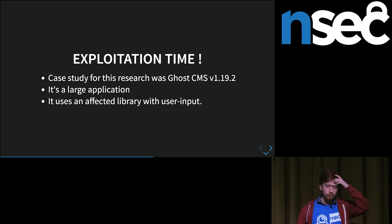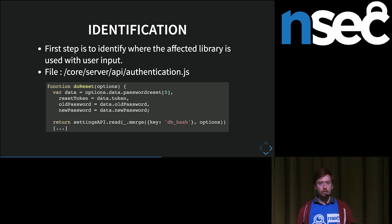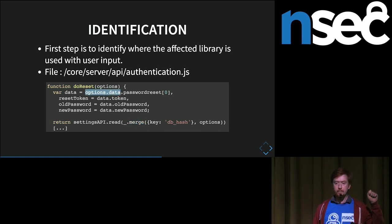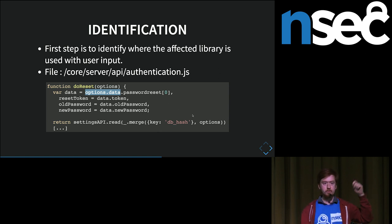The first thing we need to do is identify where the prototype pollution can occur. In the case of GhostCMS, one of the unauthenticated endpoints used for password reset used the vulnerable Lodash merge. The portion of the data we control is options.data, which in this context is essentially the body of the POST request sent to that password reset endpoint. So even though we don't fully control options, as long as we control part of the structure, the prototype pollution is going to occur.